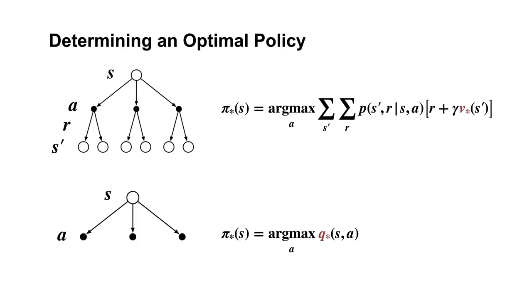If instead we have access to Q-star, it's even easier to come up with the optimal policy. In this case, we do not have to do a one-step look ahead at all. We only have to select any action A that maximizes Q-star of S and A. The action value function caches the results of a one-step look ahead for each action.